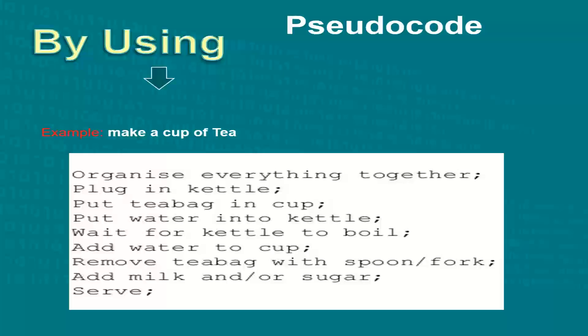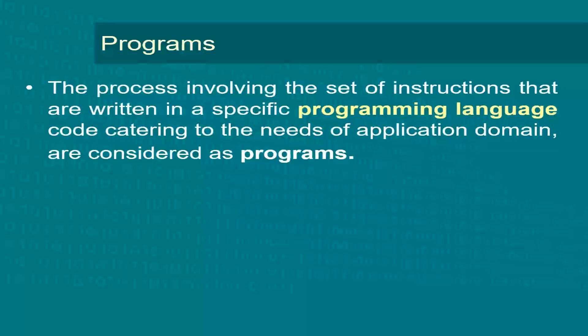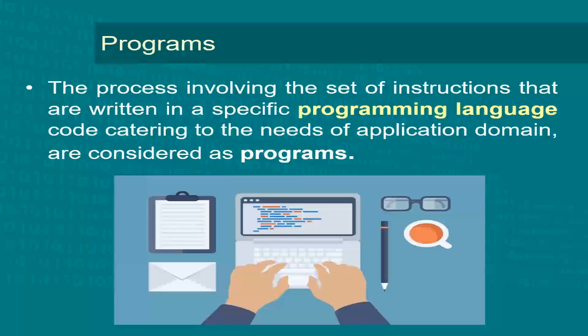Algorithms can further be represented using the set of instructions called programs. Basically, a program is a set of instructions that performs a particular task. A computer requires programs to function because they contain instructions which specify the activities to be performed according to the user requirements. As you can see, the codes are displayed and they combine together to form a program.